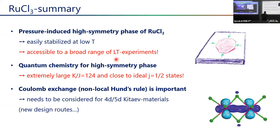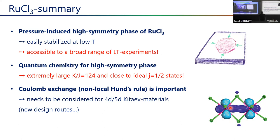This means the high-symmetry phase is easy to stabilize — you don't need a diamond anvil cell, an aluminum holder creates the biaxial strain that switches the structure into higher symmetry at low temperatures. This makes the phase accessible to a broad range of low-temperature experiments including transport. The quantum chemistry for this high-symmetry phase shows it is very likely to host a quantum spin liquid, with the highest K/J value ever reported. The Coulomb exchange is found to be important — relaxing the strict 90-degree bond angle and perfect cubic crystal requirements for finding new Kitaev materials.